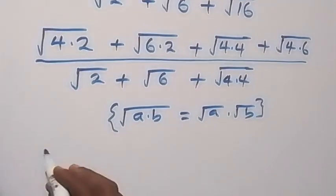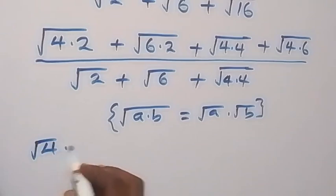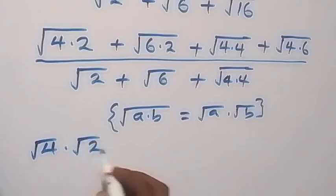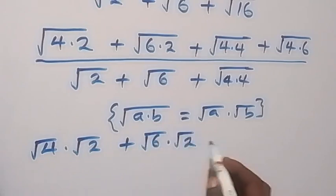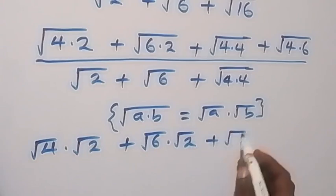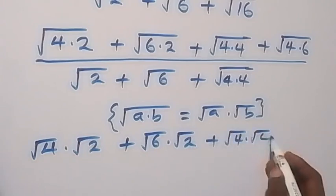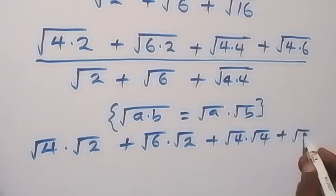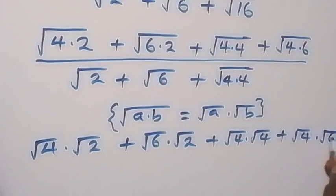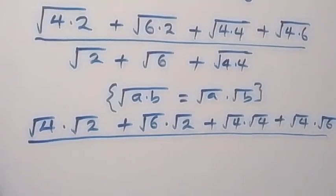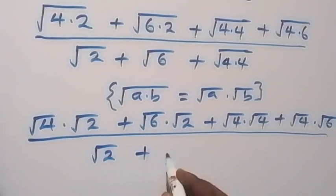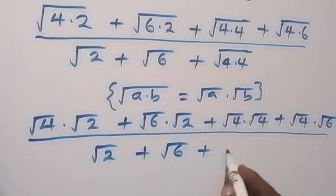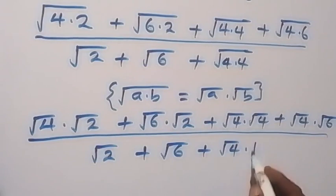We have this become root 4 times root 2, then plus root 6 times root 2, plus root 4 times root 4, and plus root 4 times root 6. Then divided by what we have in the denominator, which also becomes root 2 plus root 6 plus root 4 times root 4.